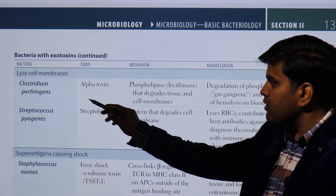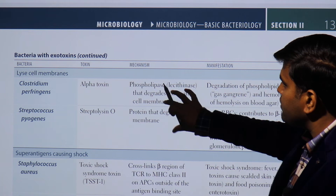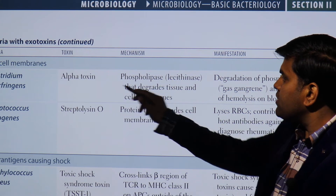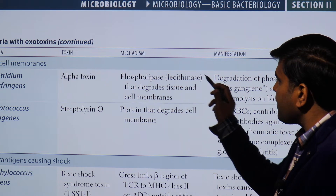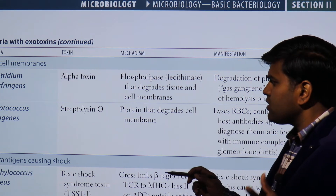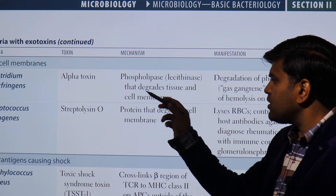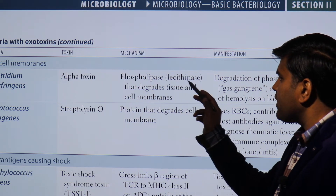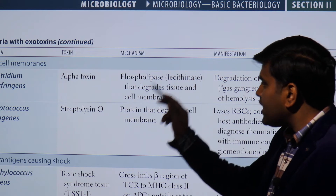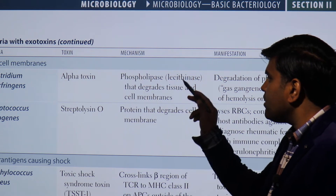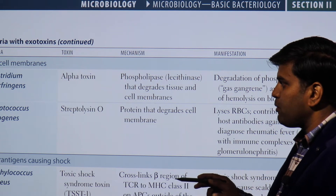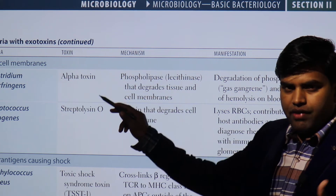Clostridium perfringens releases a toxin known as the alpha toxin. The alpha toxin is an enzyme — specifically a phospholipase, also known as lecithinase. As an enzyme, it degrades tissue and the cell membrane — it breaks down the phospholipid component of the cell membrane.